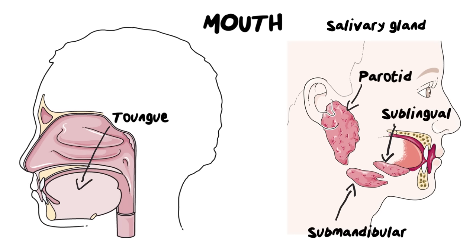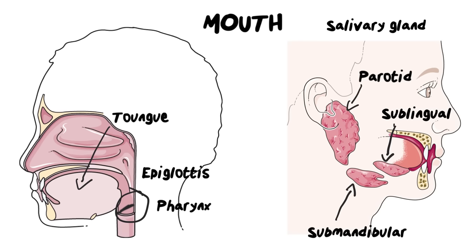Speaking of swallowing, we need to talk about what happens when food is moving down your throat. The back area of your throat is called the pharynx, and that is where food passes down into the esophagus. There is a little flap located here that prevents food from going down into your air passages. While you are breathing it sits open, but as soon as you swallow it closes — this little flap is called the epiglottis. It flaps closed into the larynx, or the voice box, and that's what prevents food from passing into your airways.